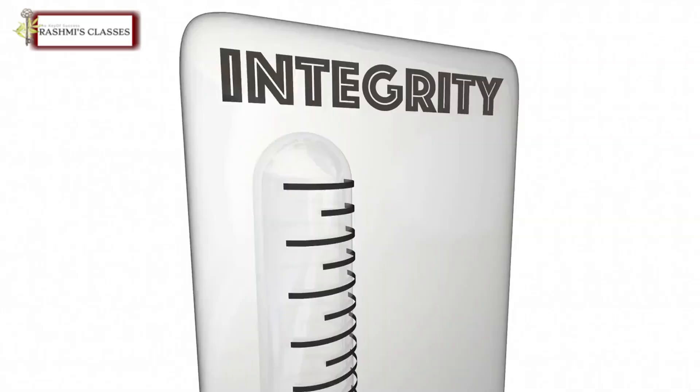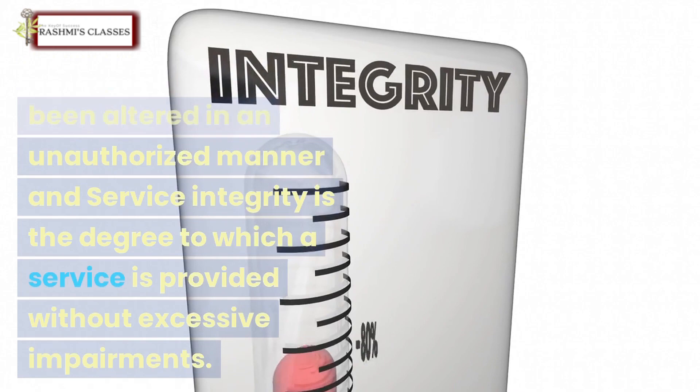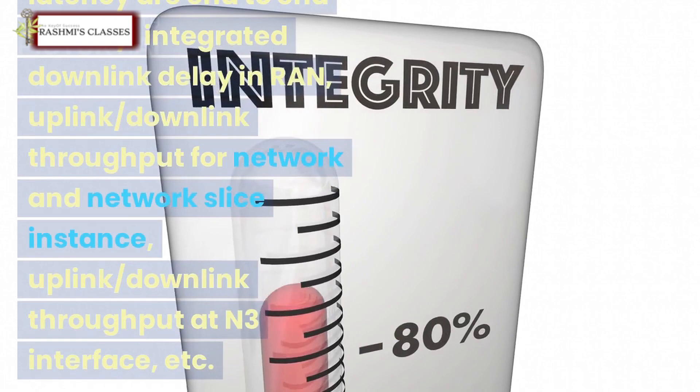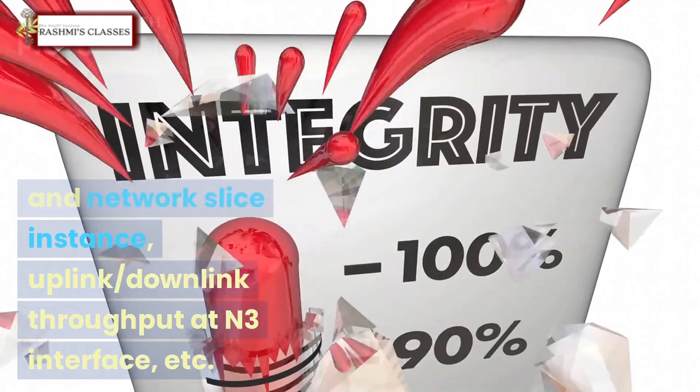Integrity KPI: integrity is the property that data have not been altered in an unauthorized manner, and service integrity is the degree to which a service is provided without excessive impairments. The categories under integrity include end-to-end latency, integrated downlink delay in RAN, uplink/downlink throughput for network and network slice instance, and uplink/downlink throughput at the N3 interface.